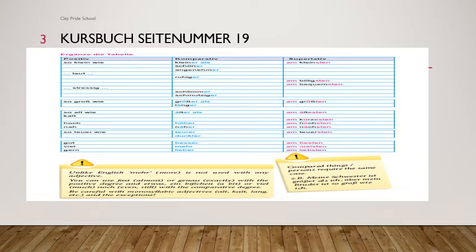Lang: zo lang wie, länger als (with umlaut), am längsten — S-T-E-N. Alt: zo alt wie, älter als (with umlaut), am ältesten. It ends with T, so -ESTEN is added.